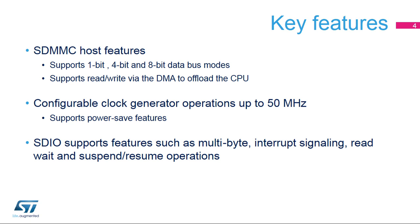The SDMMC interface interconnects with the DMA to offload the CPU during data read or write transfer periods. The SDMMC clock generator can generate signals up to 400 kHz for the initialization phase and up to 50 MHz for cards supporting high-speed mode. To enhance power consumption, the SDMMC clock can be disabled when the command and data buses are idle.